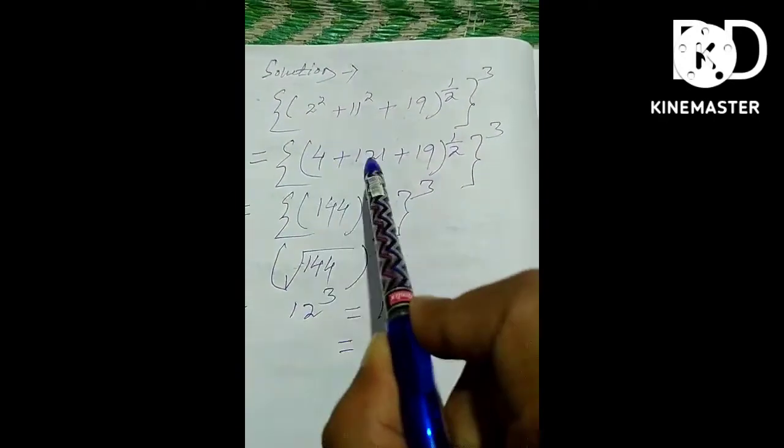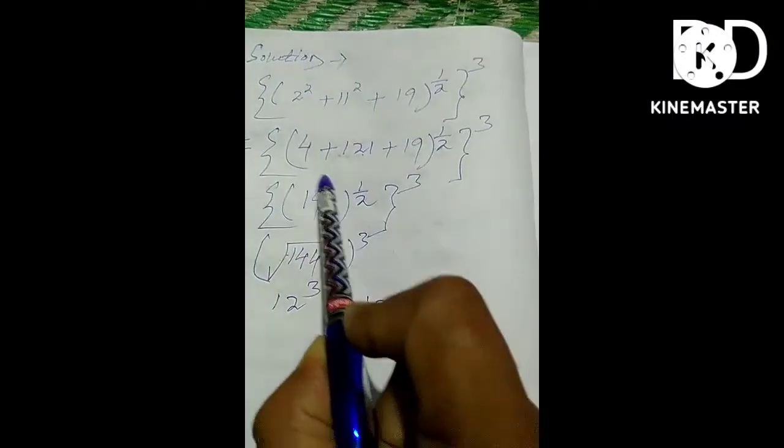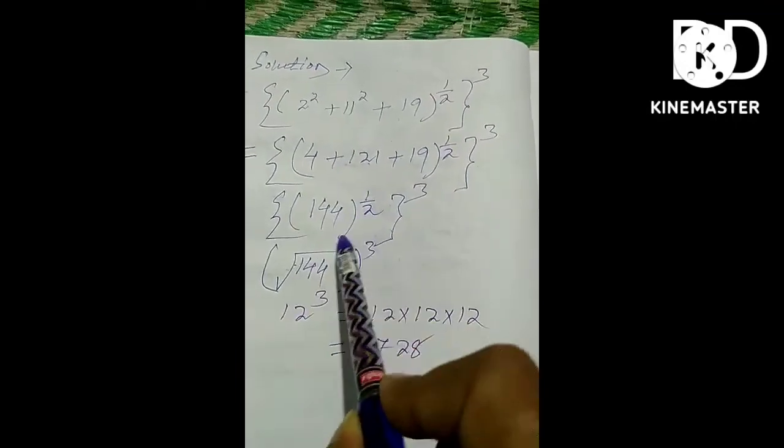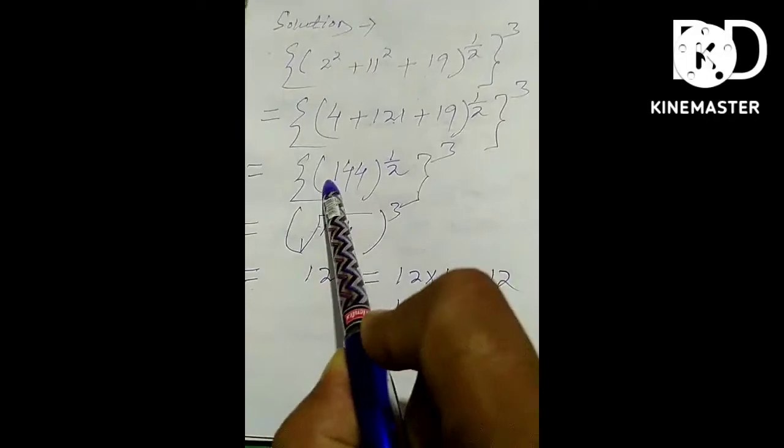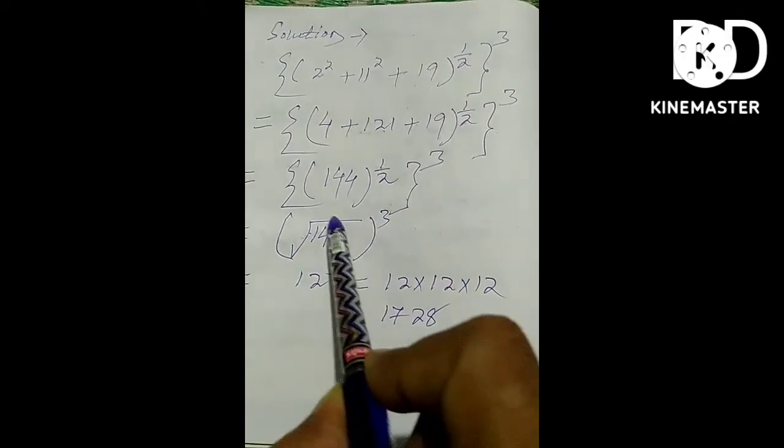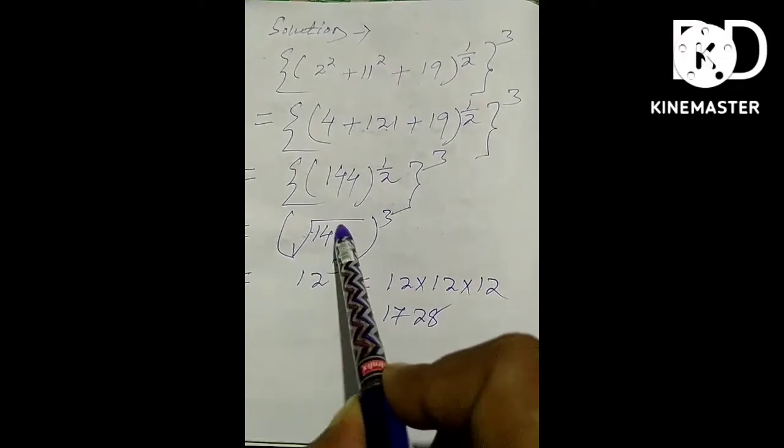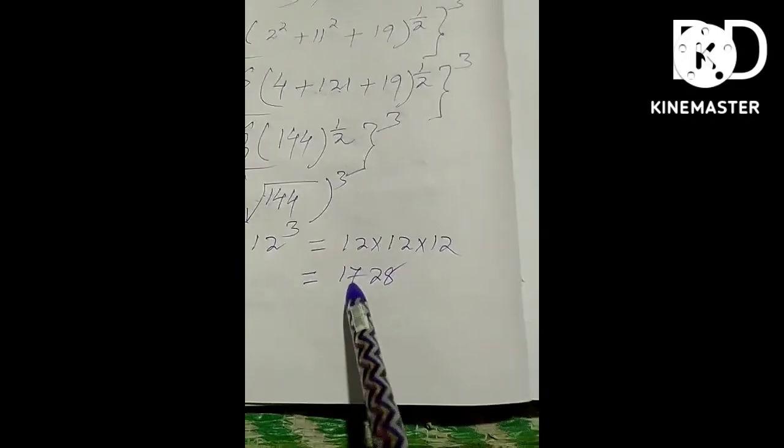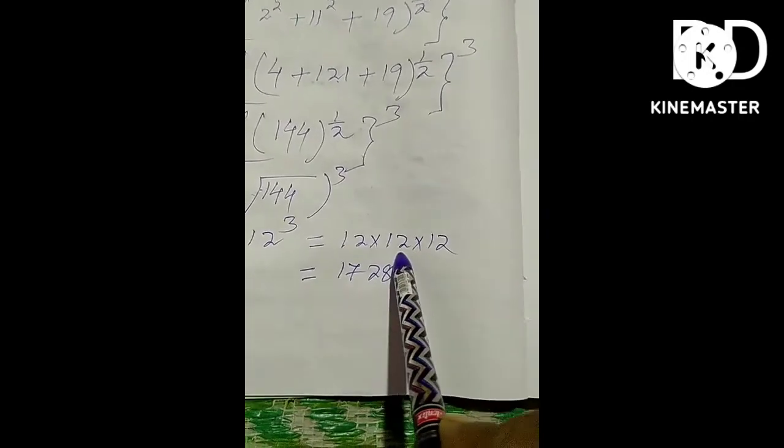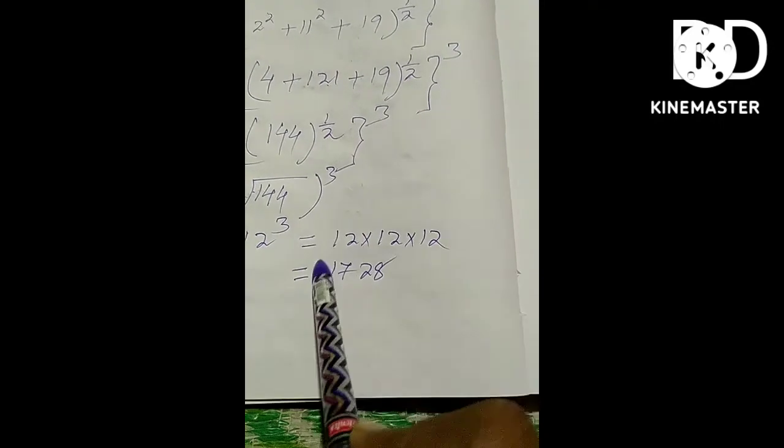4 plus 121 plus 19 equals 144, whole power 1 by 2, whole power 3. So the square root of 144 equals 12 power 3, that means 12 multiplied by 12 multiplied by 12 equals 1728.